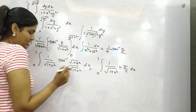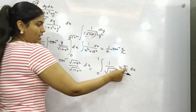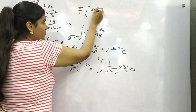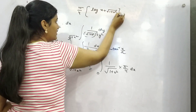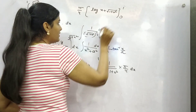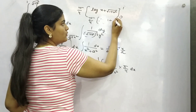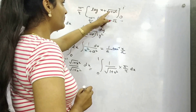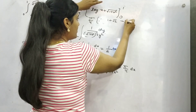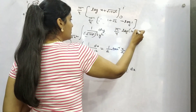Now applying the outer limit from 0 to 1, and pi by 4 is constant. You know that the integral of 1 over root 1 plus x square is log of (x plus root 1 plus x square). Applying the limit from 0 to 1: upper limit gives log(1 plus root 2), and applying 0 gives log(0 plus 1), which is log 1, and log 1 is 0. So the answer is pi by 4 times log(1 plus root 2).